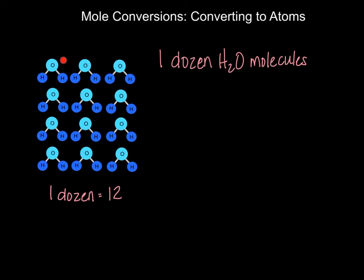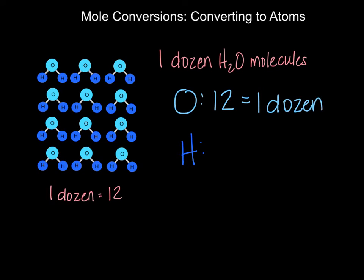Right here I have one dozen water molecules. If I take a look at the atoms individually, I can count and figure out how many atoms of oxygen and how many atoms of hydrogen I have in these 12 water molecules. Counting up all my oxygens, I notice I have 12 oxygen atoms, or one dozen oxygen atoms, in one dozen water molecules. Counting all my hydrogens, I have 24 hydrogen atoms, or two dozen, which makes sense because every water molecule has two hydrogens and one oxygen.